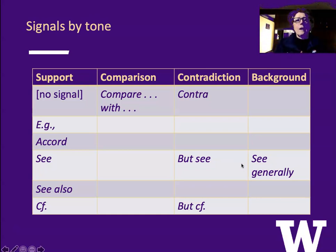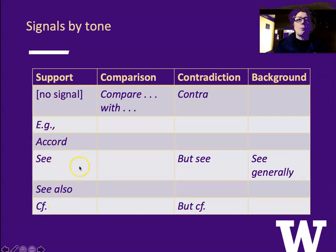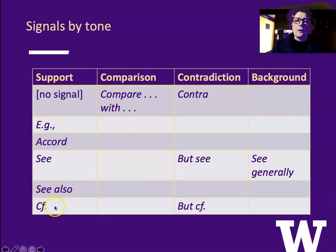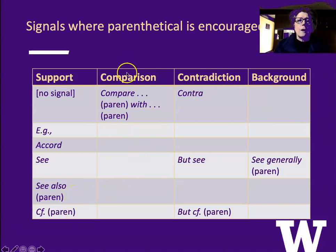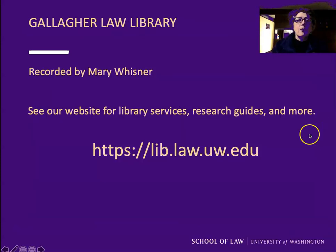Here's a little chart comparing signals judged by their tone. In one column the signals all support your proposition: no signal, e.g., accord, see, see also, and cf. — they're all support. 'Compare this with that' is the only one that's for comparison. Contradiction signals include contra (similar to no signal), but see (like see), and but cf. (like cf.). Background is 'see generally.' A second chart shows which signals should have a parenthetical to explain why you're putting in the authority: see also, cf., compare this with that, but see, but cf., and see generally — these really should all have parentheticals. This has been Mary Wisner of the Gallagher Law Library. Please see our website for library services, resources, research guides, and more.